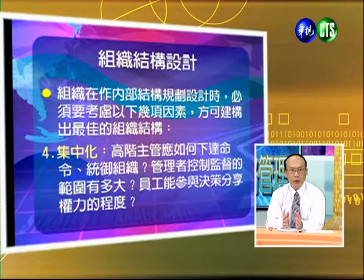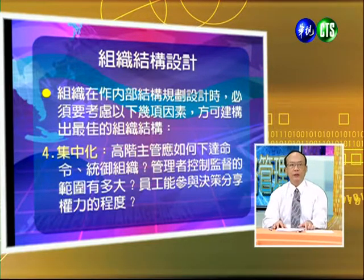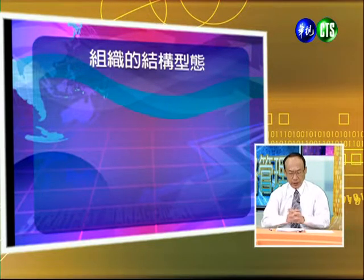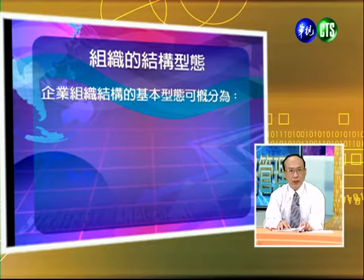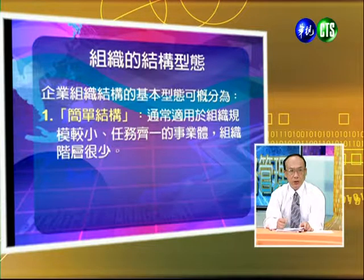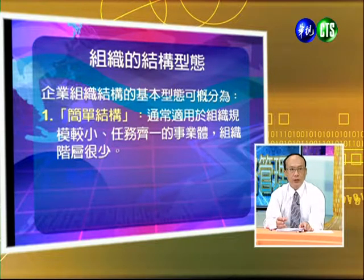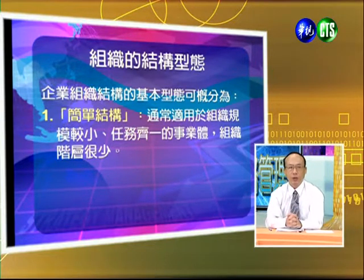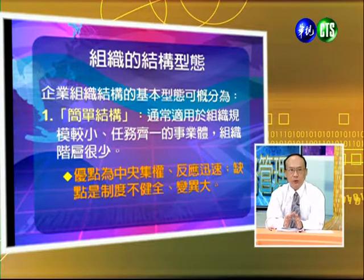第四個是集中化，高階主管應該怎樣下達命令，統籌的範圍、控制的範圍以及員工能夠參與決策分享的程度。接著來談組織結構形態的區分。第一種是規模小的公司採用簡單的結構，優點是中央集權、反應快速，缺點是制度比較不完整，且變異會很大。第二種是職能式的結構，常見的有會計部門、業務部門、總務部門，優點是方便行政管理且能發揮職能專業，缺點是容易形成官僚體系、互相推責任、反應速度較遲緩。